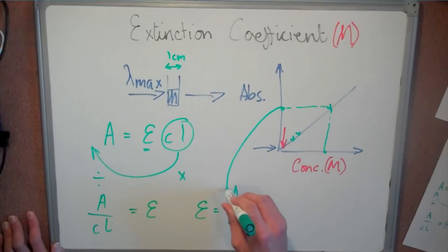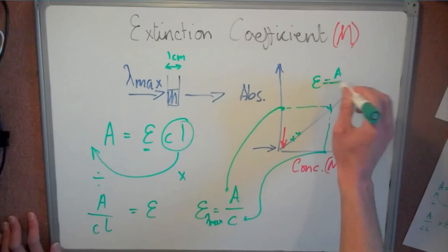The extinction coefficient is the gradient of the line relating concentration to absorbance at a certain wavelength, in this case lambda max.